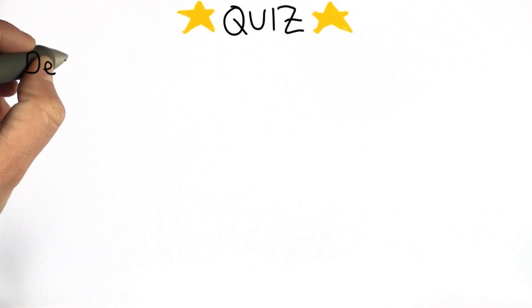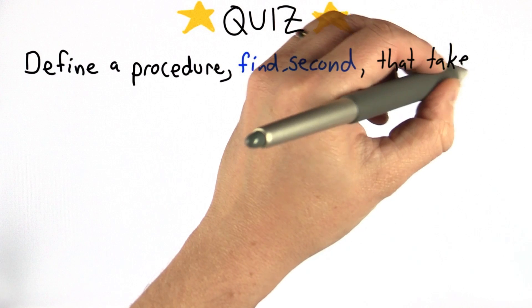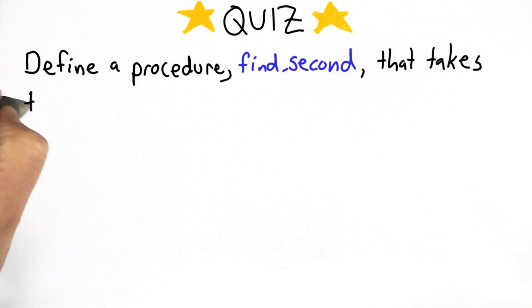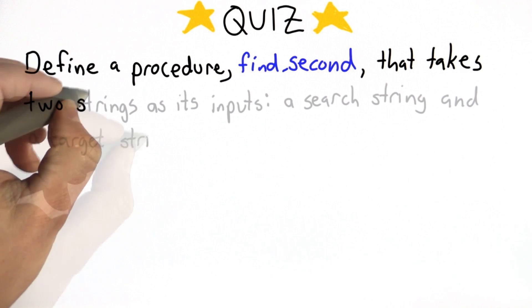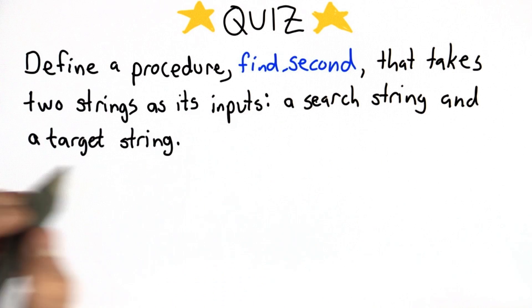So here's the question. Your goal is to define a procedure, and we'll call this one findSecond, and it takes two strings as its inputs. So the first input is the search string. The second input is the target string,